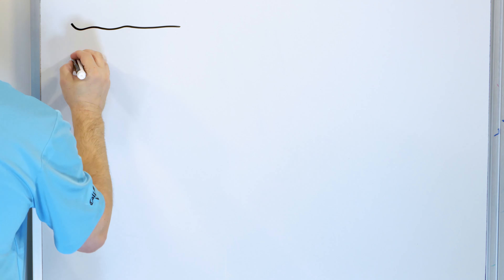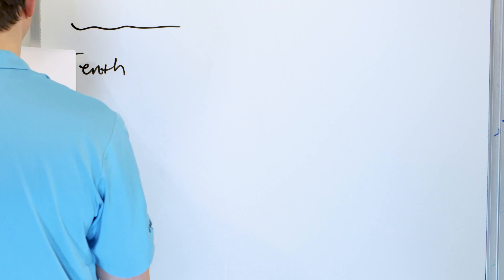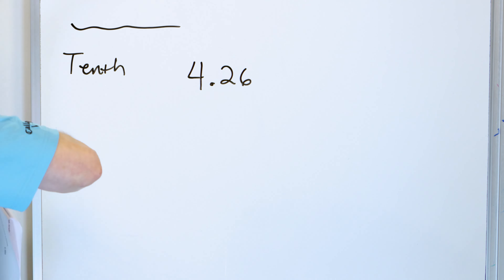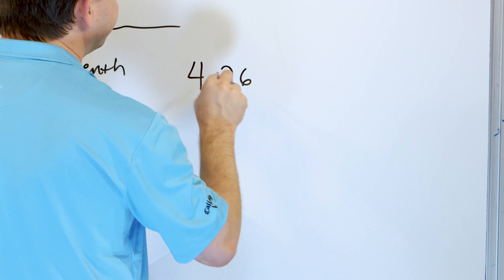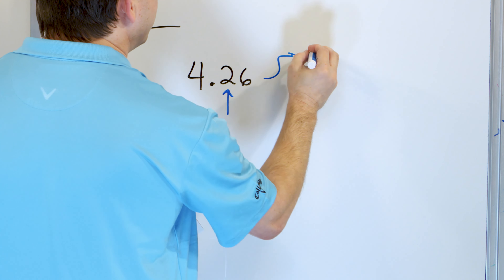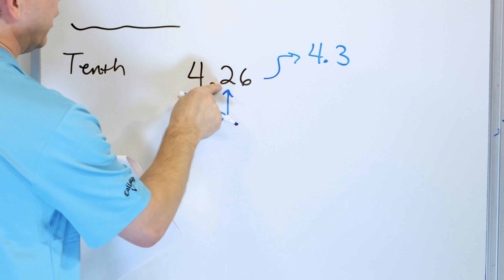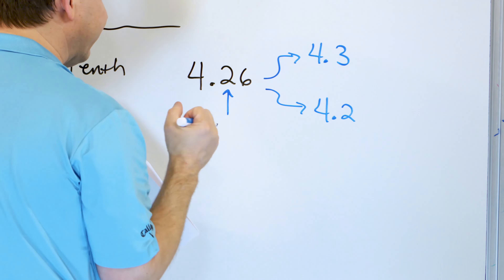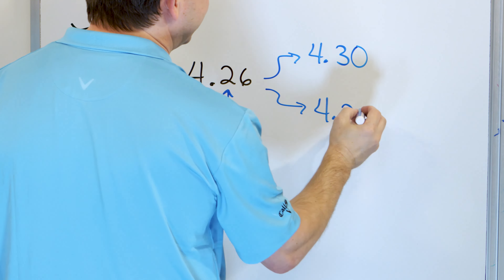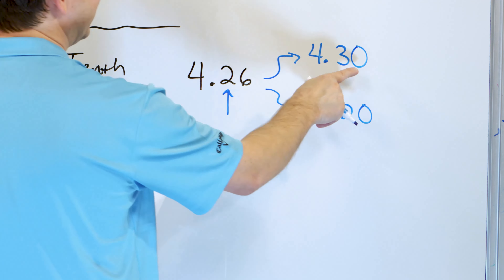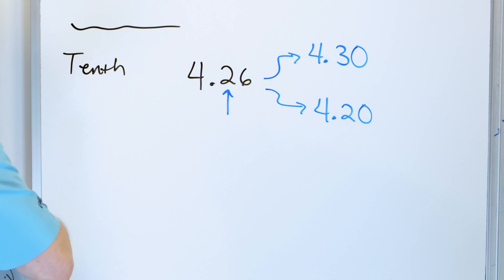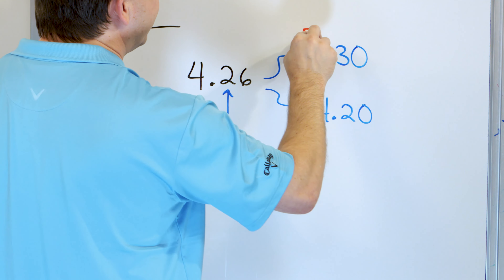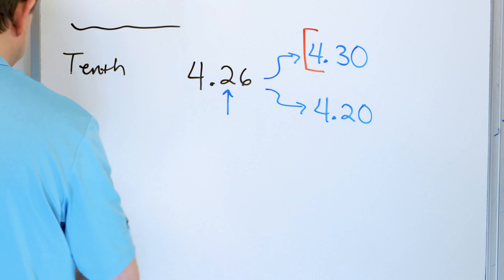We're going to round four point two six to the nearest tenth. The tenths position comes right beyond the decimal. If we round up we land on four point three, or we round down by staying on four point two. We look to the right and have a six, which of course is greater than five, so we round up to four point three.